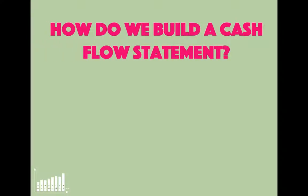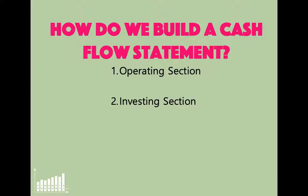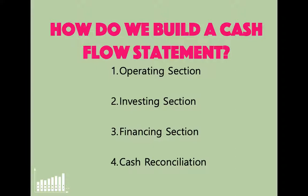To build a cash flow statement, we use three major sections: the operating section, the investing section, and the financing section. These reflect the major activities businesses engage in. The last part is a reconciliation to ensure we've identified the correct change in cash from the last period to the current period. The operating section can be prepared using the direct method or the indirect method, and research indicates the indirect method is used by about 98% of companies — so our focus will be on that.